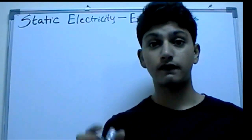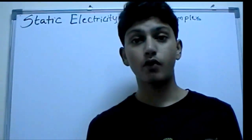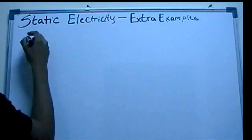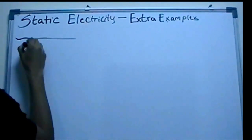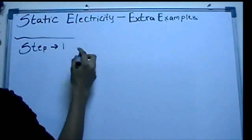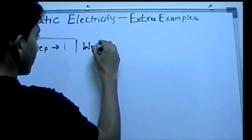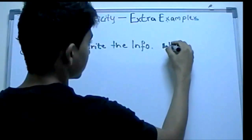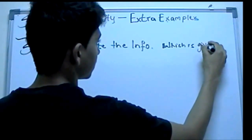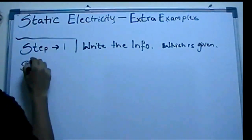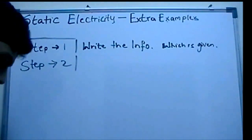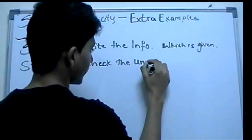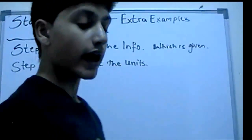If a word problem pops up to you, what you need to do is follow the steps. Step one: write the information which is given. Step two: check the units. This step has two steps in it.